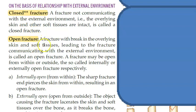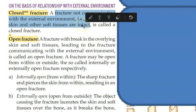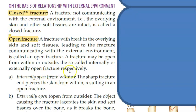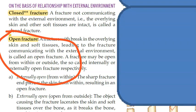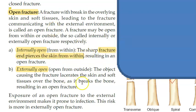Open fracture is the same as compound fracture — please remember, if they ask compound fracture in an exam, write open fracture. Closed means the skin is closed. Open means the skin is open and you can see the soft tissues inside. Open fractures can be internally open — where the fracture end pierces the skin from within — or externally open, where from outside something has opened it.